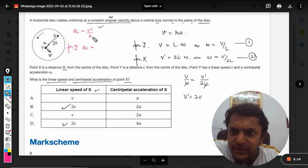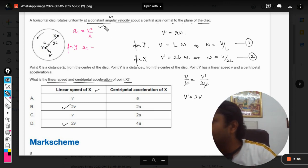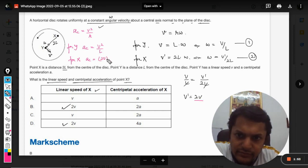For Y, centripetal acceleration will be given by v squared over l. But for X, the acceleration will be given by v dash, now which is found to be 2v, so 2v whole squared divided by the new radius which is 2l.